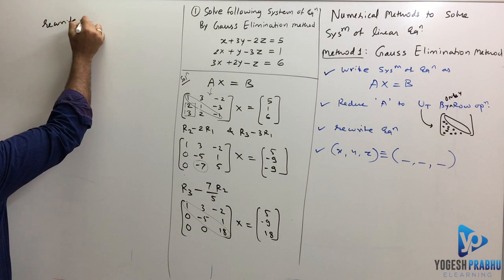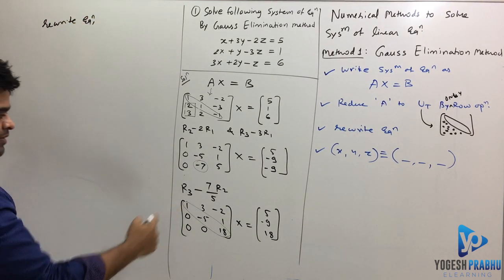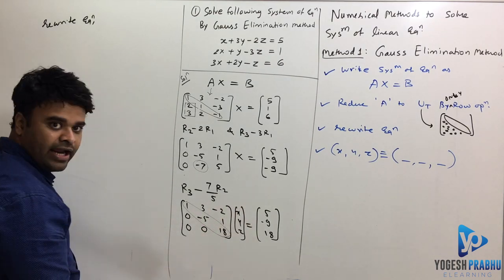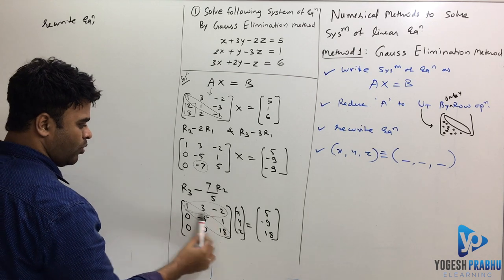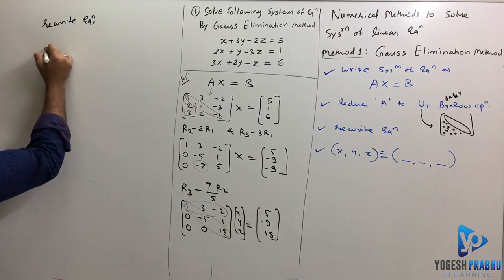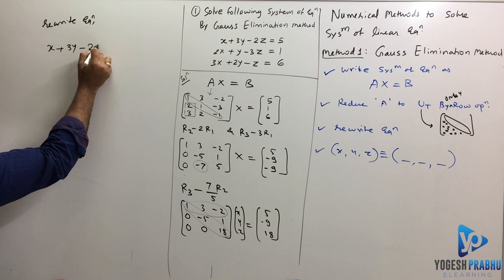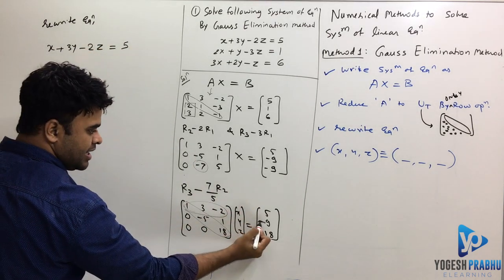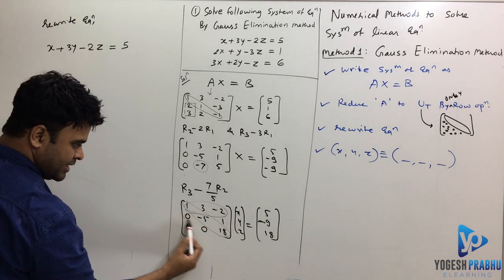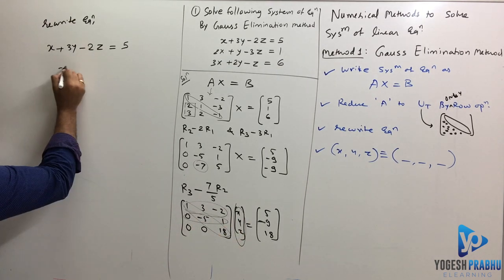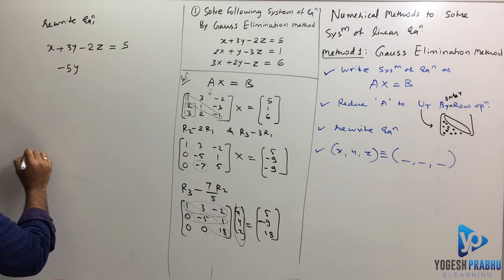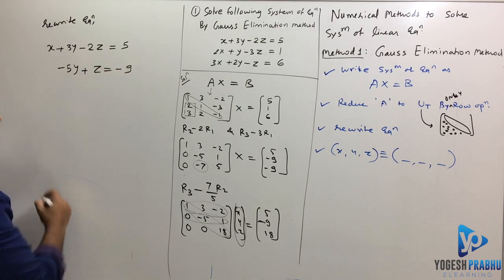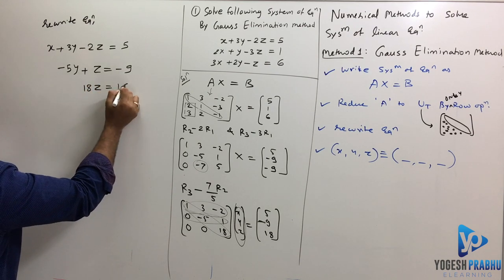If I rewrite equations, I'll write down these equations in the form. This capital X was actually x, y, z. To rewrite equations, multiply row by column. So I'm going to get this as x plus 3y minus 2z equals 5. And then second equation is going to be this row by this column. It's going to be minus 5y plus z equals minus 9. And then this is 18z equals 18.